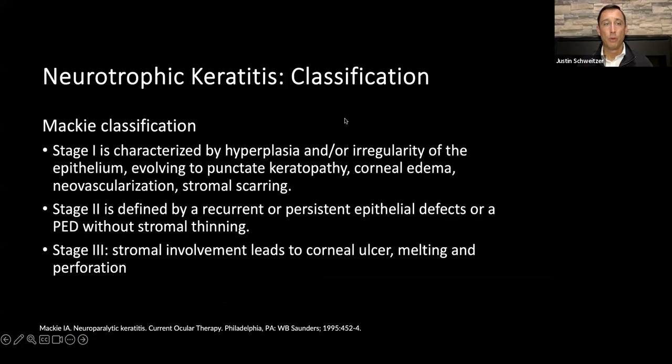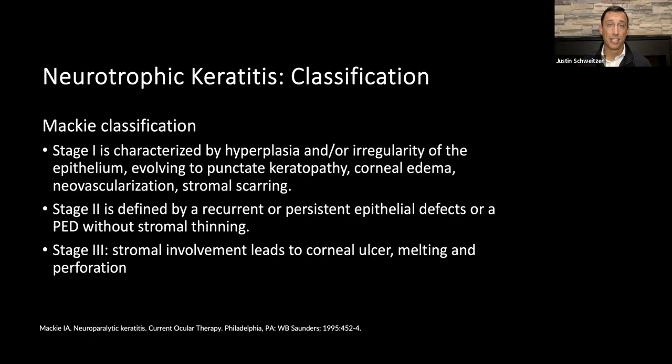Here's the classification system. Stage one is punctate epithelial keratitis, which is what our patient had — that's the MAC classification stage one. Stage two is a persistent epithelial defect. If a patient is not in pain and has a persistent epithelial defect that's challenging to heal, that's very likely neurotrophic keratitis. Stage three is when there's actual stromal involvement and the cornea is beginning to melt. This is a progressive condition — patients often start at stage one, move to stage two, then stage three. Our goal is to catch it at stage one and manage it before it progresses.